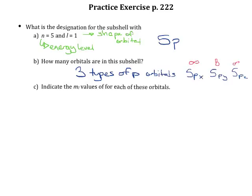The next part asks us for the m sub-l values. M sub-l tells you the orientation in space. The values of m sub-l are derived from the values of l — m sub-l is always equal to plus or minus l and anything in between. So if l is 1, that means minus l is negative 1 and plus l is positive 1. The only integer in between is 0, so your three values of m sub-l are negative 1, 0, and positive 1.